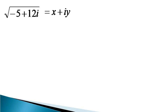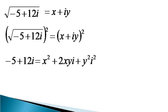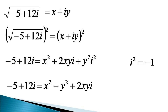Where both x and y are real numbers. Now we square both sides to get minus 5 plus 12i as equal to x squared plus 2xyi plus y squared i squared. And we know that i squared is equal to minus 1, so the expression becomes minus 5 plus 12i is equal to x squared minus y squared plus 2xyi.